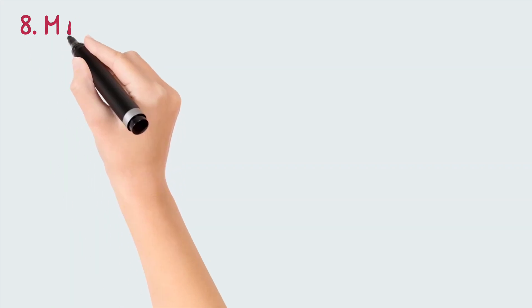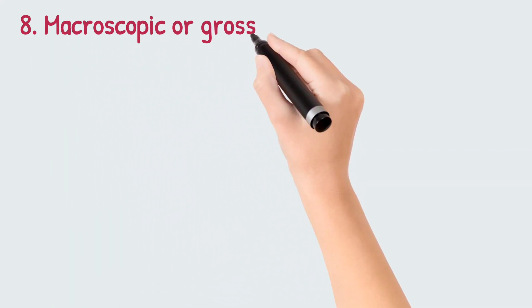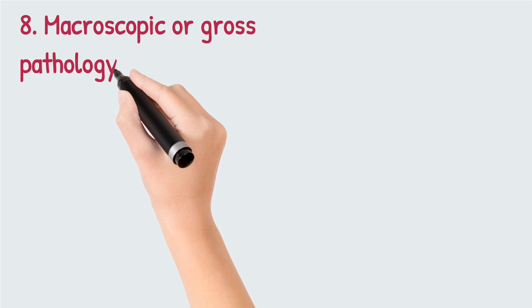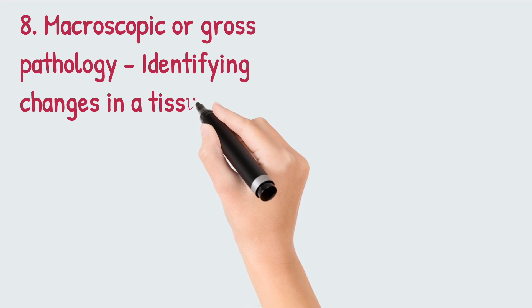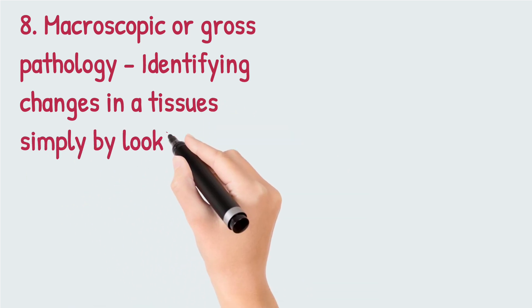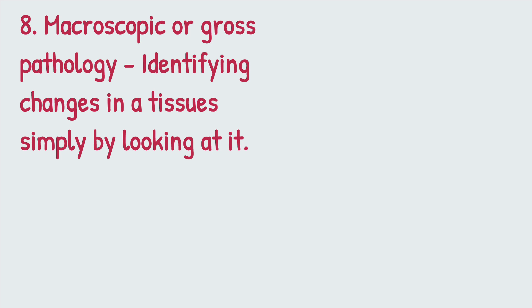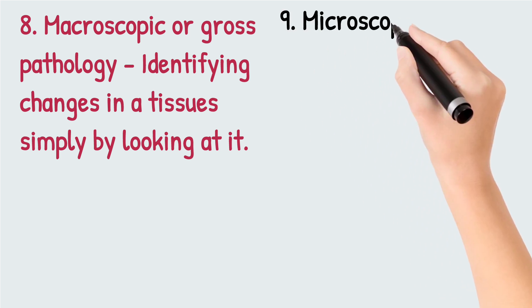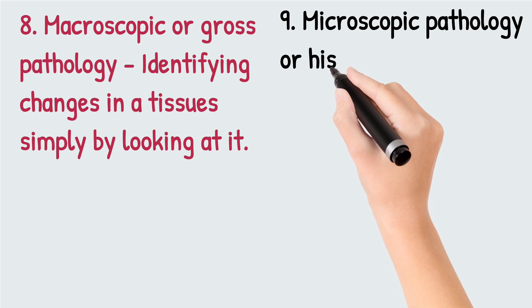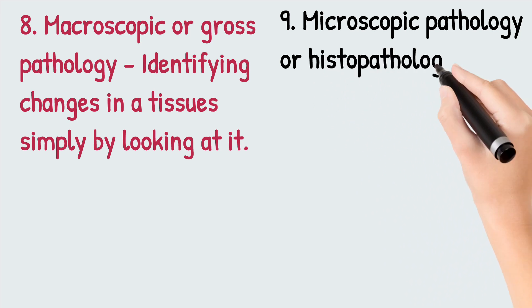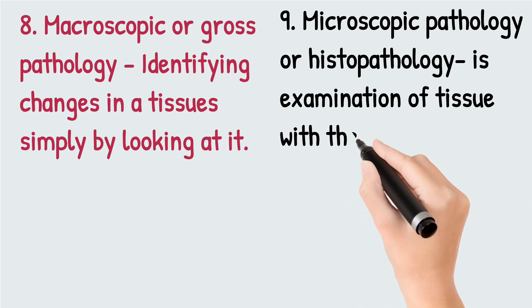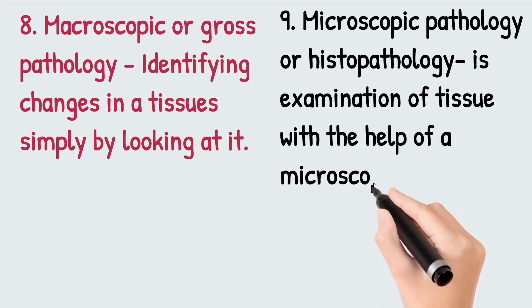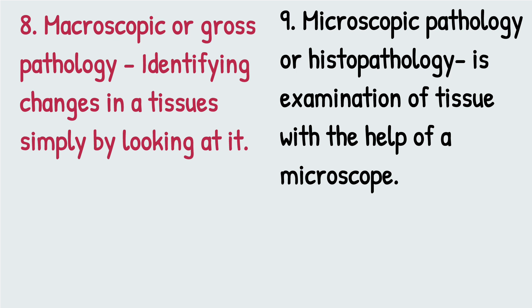Number eight is macroscopic or gross pathology, which is the examination of animal tissue without the help of a microscope. Number nine is microscopic pathology, which is the examination of animal tissue with the help of a microscope. The difference is clear: with macroscopic pathology you don't need a microscope, while with microscopic pathology you do need one.